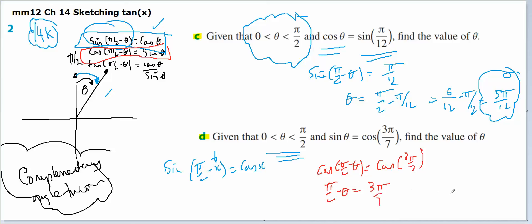Put that over there. Theta is going to equal π/2 minus 3π/7, which all over 14 is seven minus six pi. Therefore, theta equals π/14.